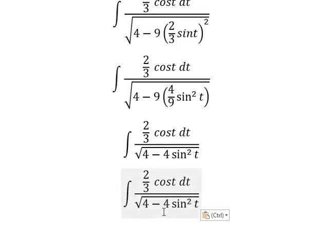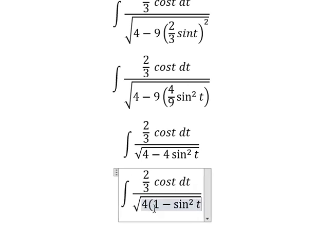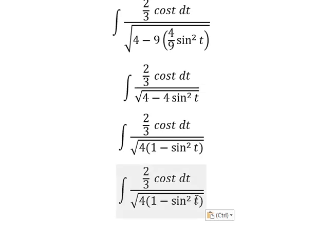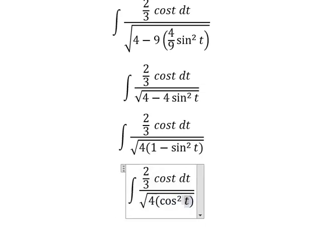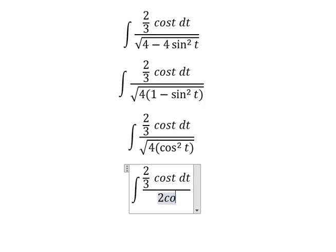So number 4 and number 4 we can do factorization. One minus sin t squared we change for cos t squared. The square root of 4 cos t squared we have 2 cos t.